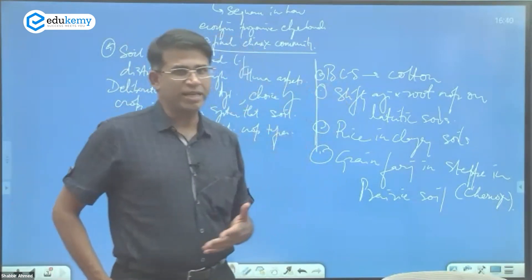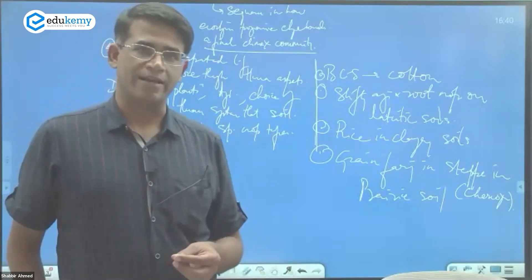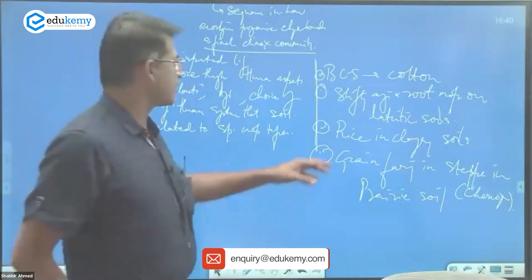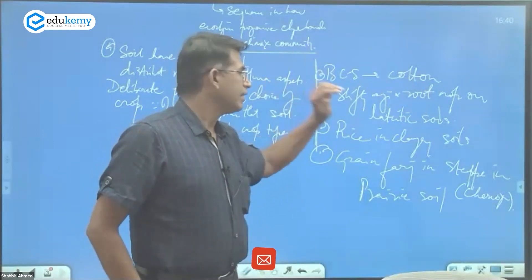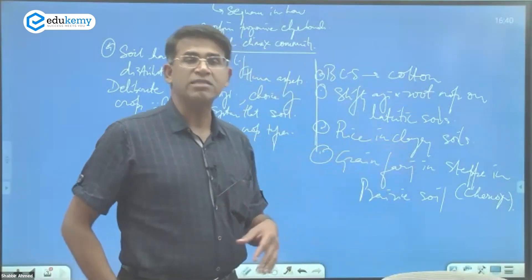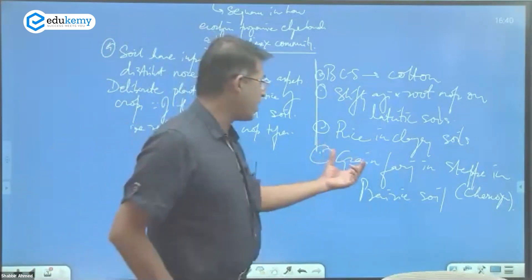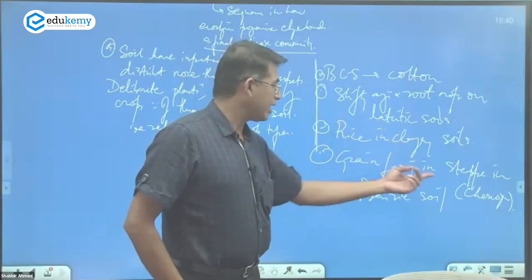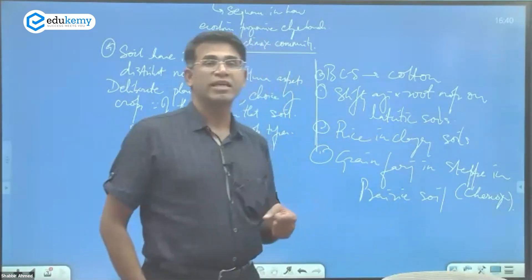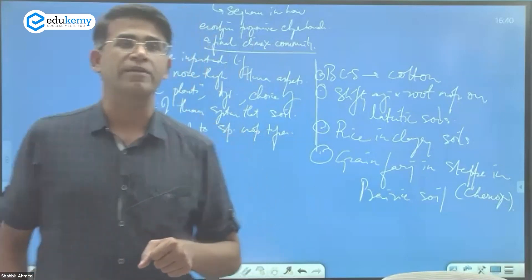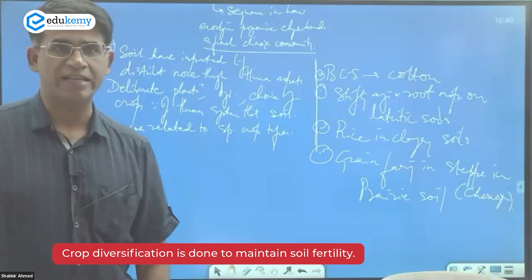It is not that black cotton soil naturally had cotton — man planted it. Naturally, laterite regions don't need to have root crops; man starts planting them. Rice grows well in clay soils; wheat or grain farming in the chernozems of steppes or prairie soils is again a human decision. Crop diversification also maintains soil fertility.